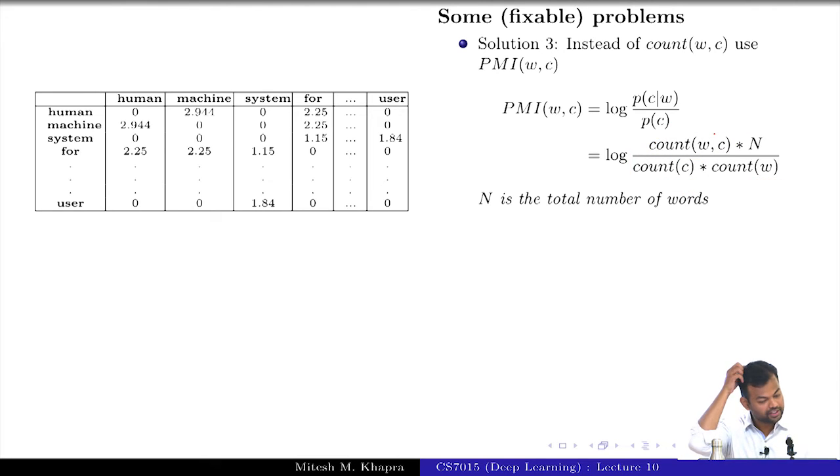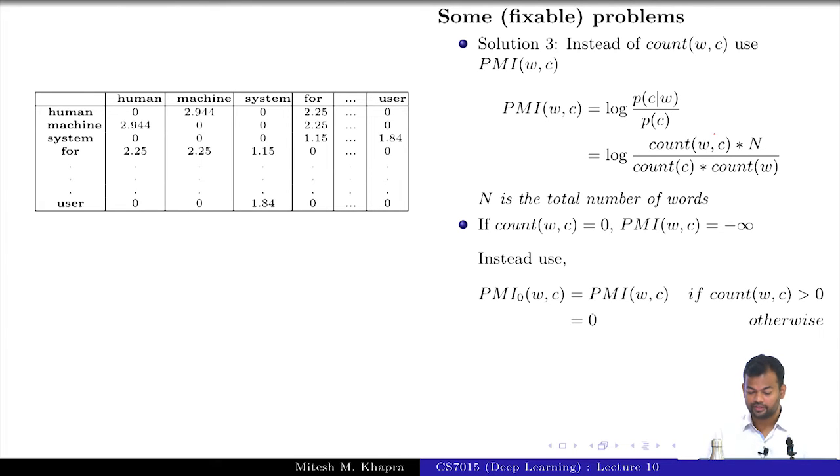This is what would happen if you replace the counts, the co-occurrence counts, by the corresponding PMI. Now if the count of two words is 0, we have a problem because then the PMI tends to be minus infinity. How do you deal with the situation? Epsilon or some hack, as usual. So instead of PMI, use something known as PMI(w,c) which works like this. If the count is greater than 0, then you use PMI. If the count is not equal to 0, then you just put the entry 0 in the cell.